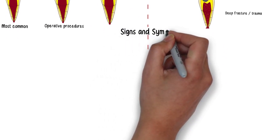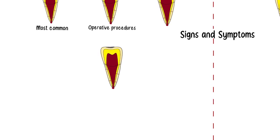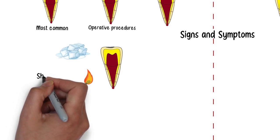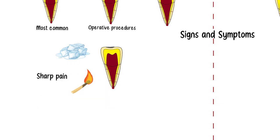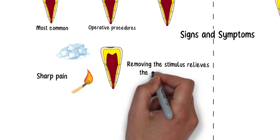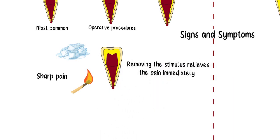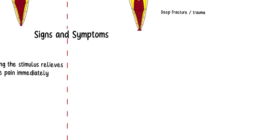When it comes to diagnosis, reversible pulpitis is mostly symptomless, but if symptoms do occur they follow a particular pattern. Application of hot and cold stimuli causes sharp transient pain on a tooth suffering from reversible pulpitis — so much so that it is unbearable for the patient — while removing the stimulus relieves the pain immediately. Irreversible pulpitis can either be symptomless or it can have clinical signs and symptoms.